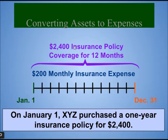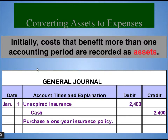Let's see an example. A $2,400 insurance policy provides coverage for 12 months. Dividing $2,400 equally among 12 months gives $200 monthly insurance expense. When you buy this $2,400 insurance policy in advance, it becomes an asset — it is unexpired and for future benefit. So you debit unexpired insurance as an asset and credit cash, because you paid cash to buy this insurance. This is how the journal entry looks when you purchase a one-year insurance policy.